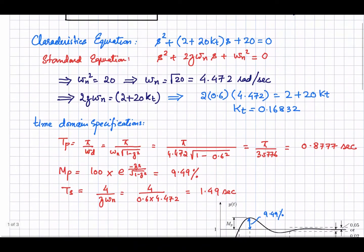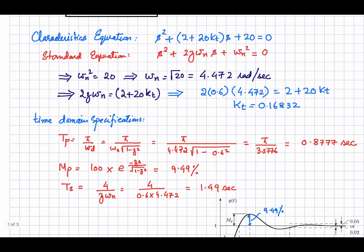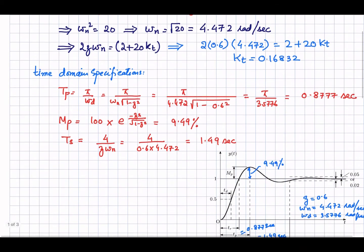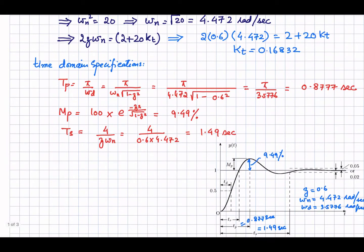Now that we have evaluated the gain kt, other time domain specifications can be easily calculated. We know zeta, kt, and ωn. The peak time tp = π/ωd, where ωd = ωn × √(1 − ζ²). Plugging in the values gives us tp — the time to reach the first peak of the second order transient response. The overshoot can be calculated from zeta, and it equals 9.49 percent.